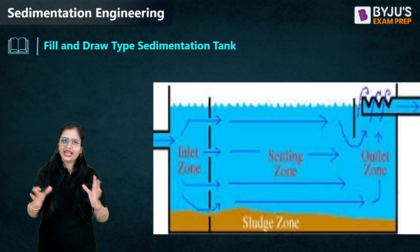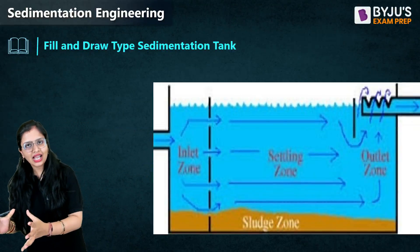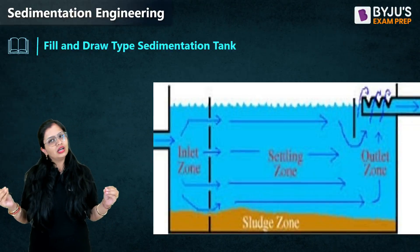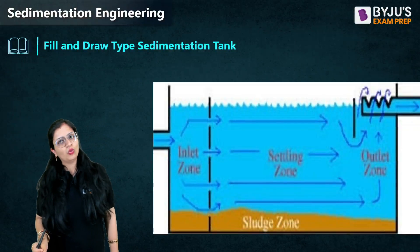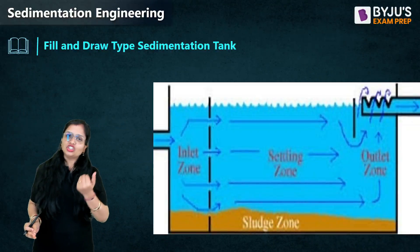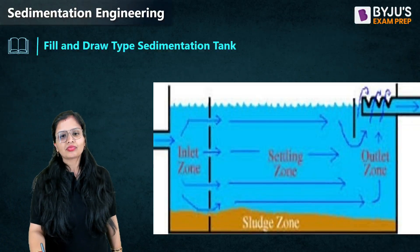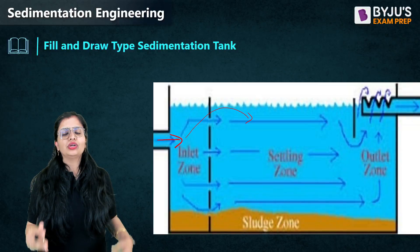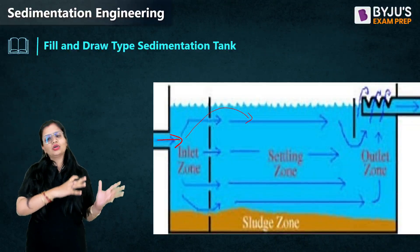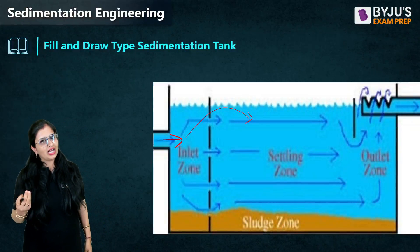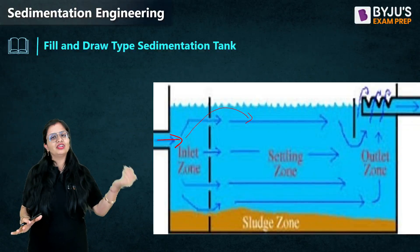Let's look at the fill and draw type sedimentation tank. As the name suggests, you fill the tank with the water to be treated and bring the water to rest — turbulence is zero, there is no hazardous movement of water. When the water is at rest, the particles will eventually settle down. After that, you draw the water out. Water from screening or aeration goes into the inlet zone, then into the settling zone where specific gravity comes into action. With turbulence at zero, particles with higher specific gravity settle down.